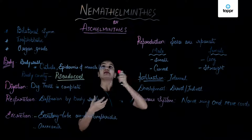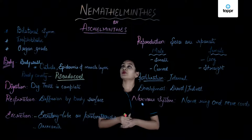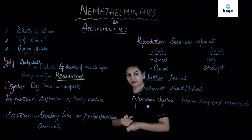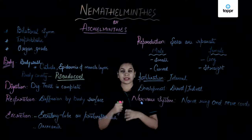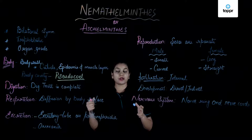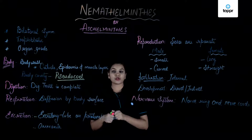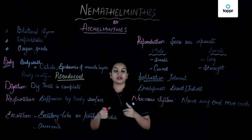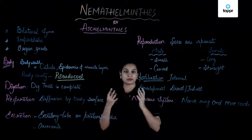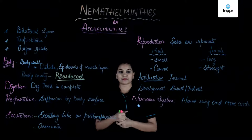Gorgonborg built this phylum called Nemathelminths. When we talk about their habitat, we see that they can be found everywhere, right from sea water or fresh water, may be in the soil, or as parasites in animals as well as in plants.